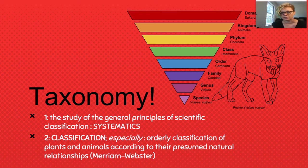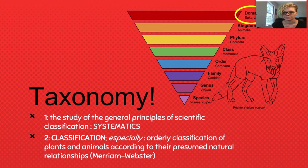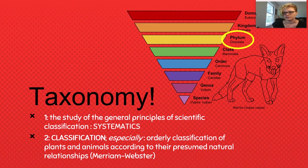Let's use the red fox as an example. We go from the domain Eukarya, which encompasses everything from plants to single-celled organisms, down to the kingdom Animalia, which narrows it down to animals. Then we progress to the phylum Chordata, which includes every animal with a backbone.